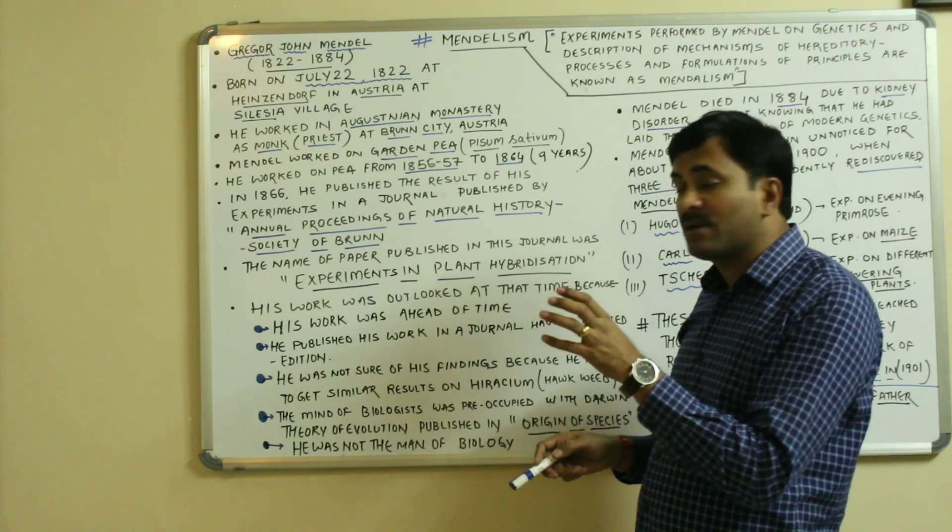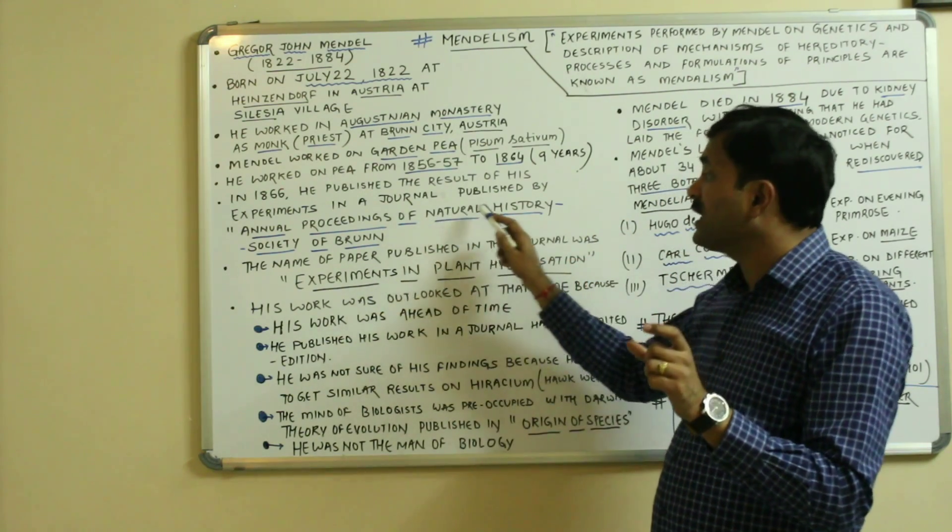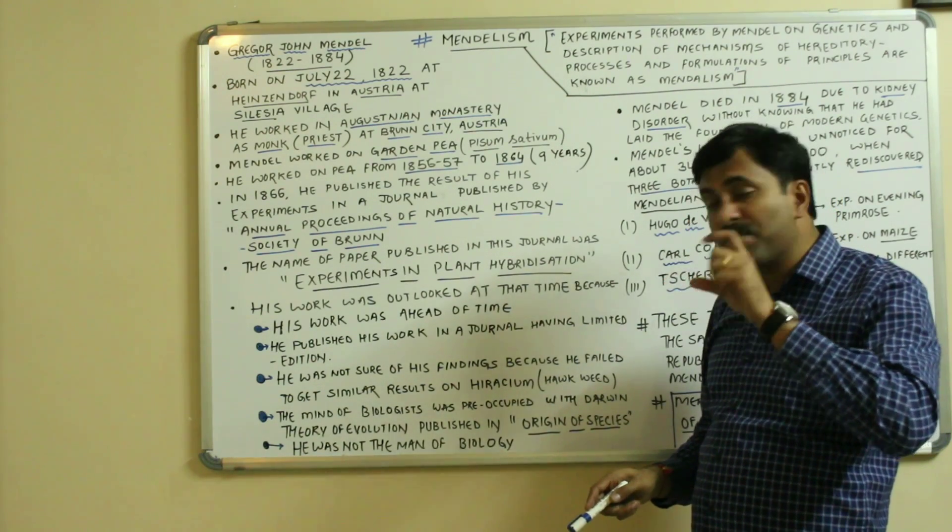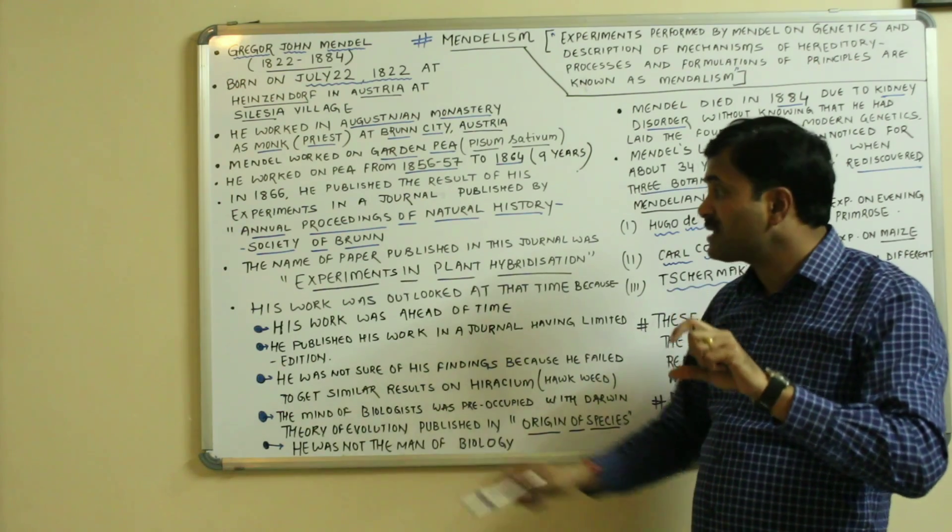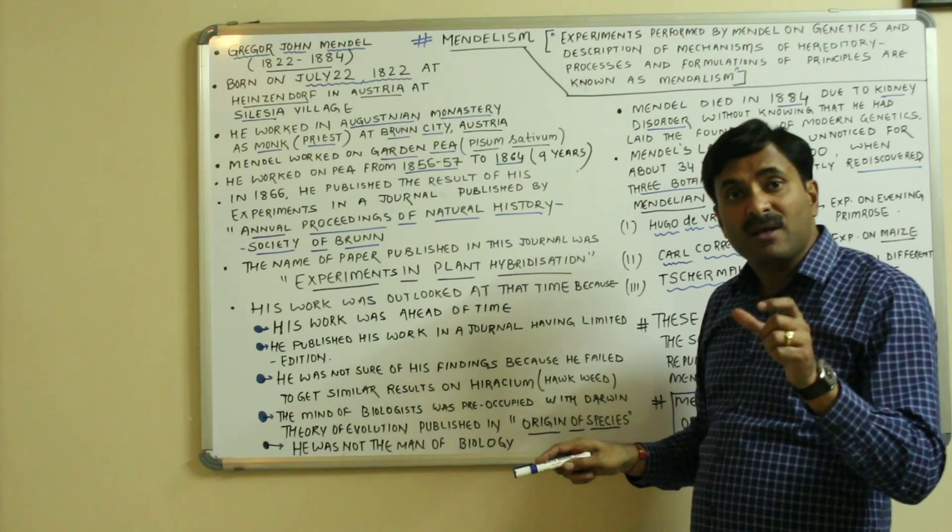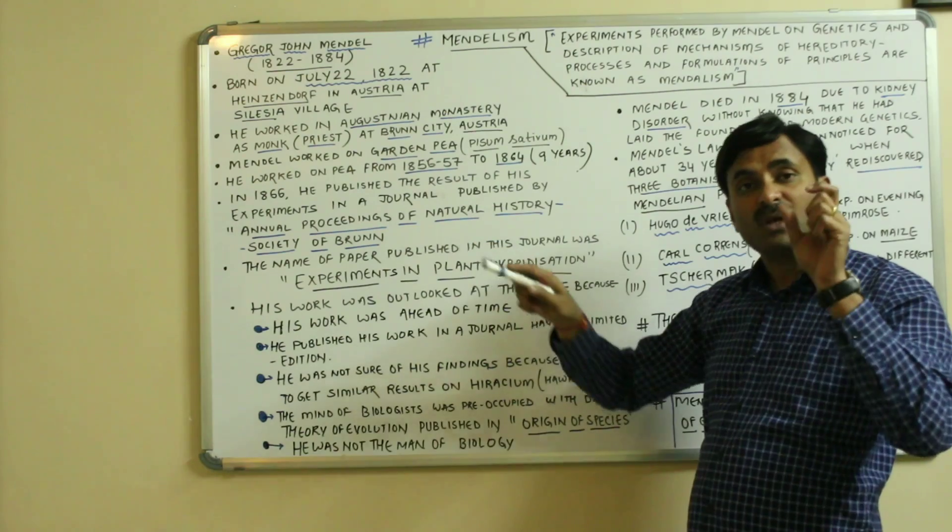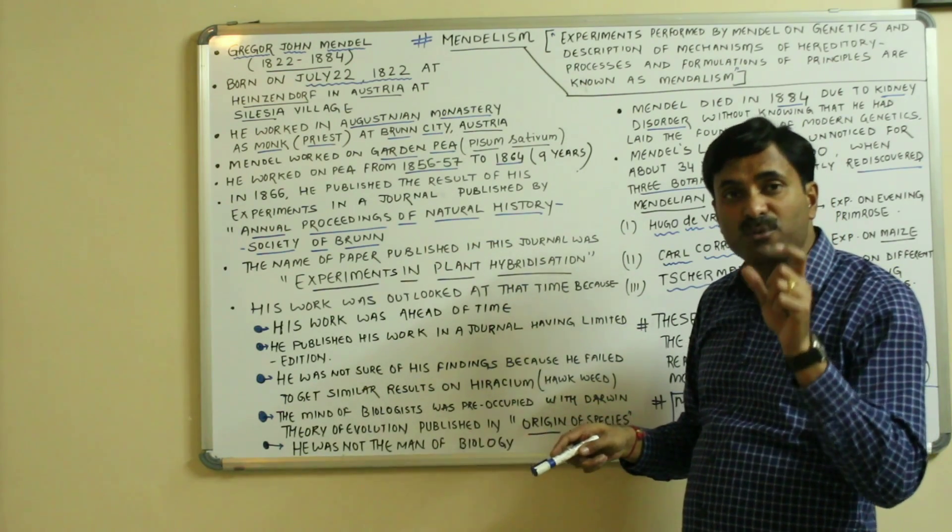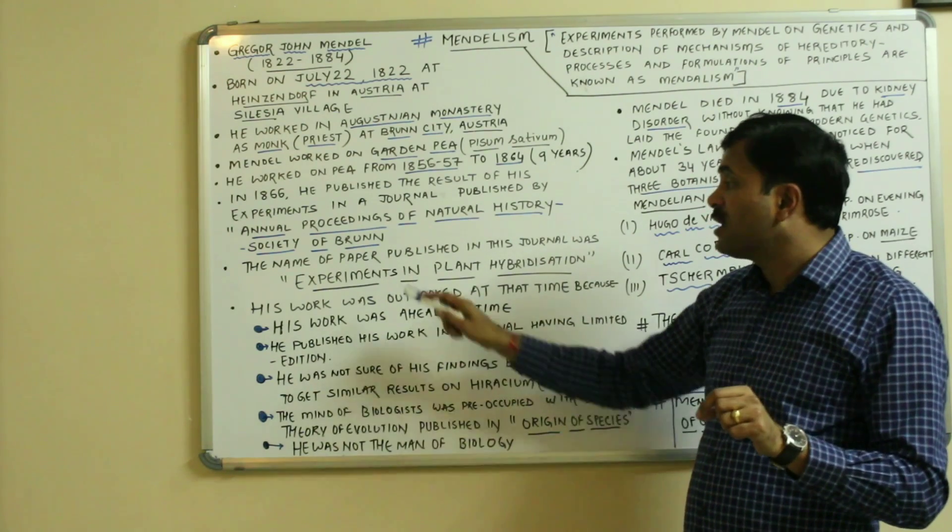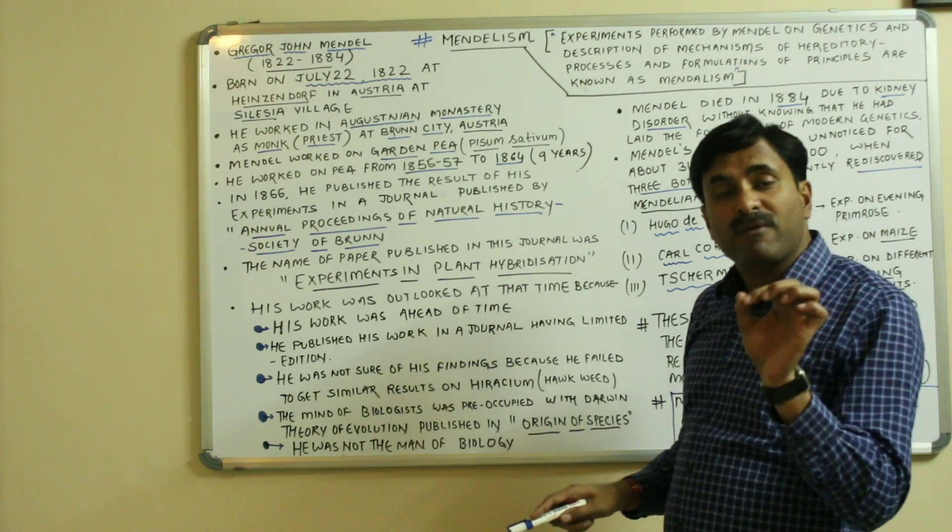He published in a journal which was published by Annual Proceedings of Natural History Society of Brno, and the paper published in this journal was having the name Experiments in Plant Hybridization. The journal in which the work was published was named Annual Proceedings of Natural History Society of Brno, and the name of the paper was Experiments in Plant Hybridization.